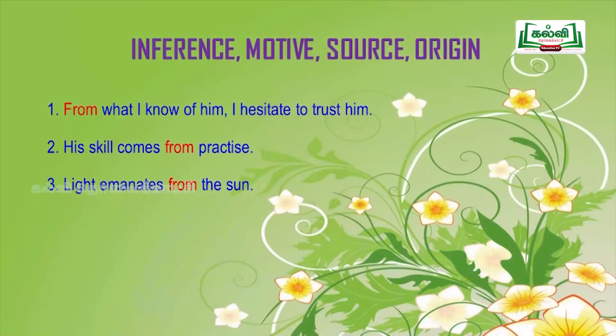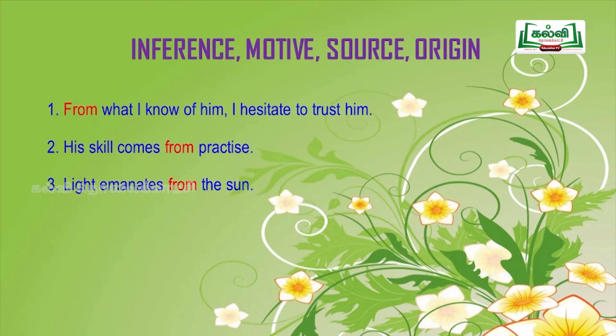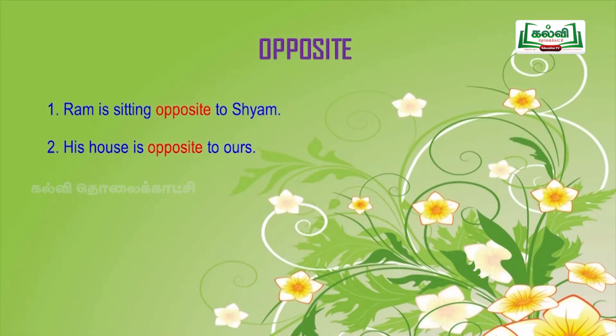Then, examples for inference, motive, source and origin. First: 'from what I know of him, I hesitate to trust him' — from. Second: 'his skill comes from practice' — from. Third: 'light emanates from the sun' — from. Additionally, opposite is also a preposition: 'Ram is sitting opposite Shyam.' 'His house is opposite to ours.'